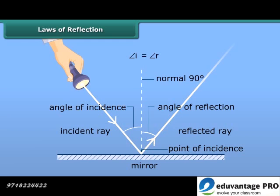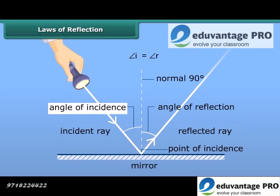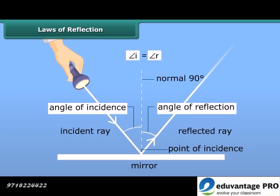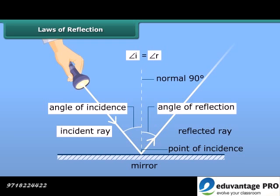The reflection of light at a surface obeys the following two laws, which are called the laws of reflection. According to the first law, the angle of incidence is always equal to the angle of reflection — that is, angle I is equal to angle R. The second law states that the incident ray, the normal at the point of incidence, and the reflected ray all lie in the same plane.